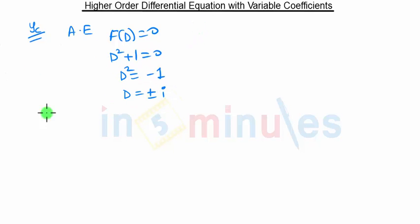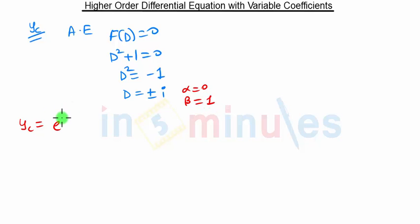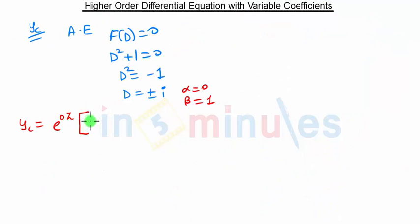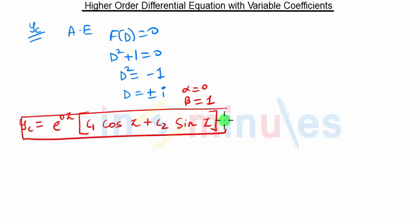For complex roots, yc is given by e^(αx). In our case α = 0 and β = 1. Note that our variable here is z — instead of the usual x, we now have z. So yc = e^(0·z) · [c₁ cos(z) + c₂ sin(z)], which simplifies to c₁ cos(z) + c₂ sin(z).